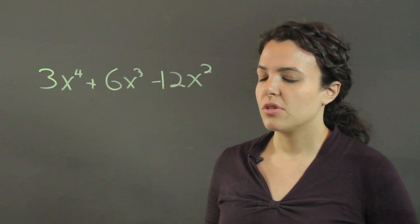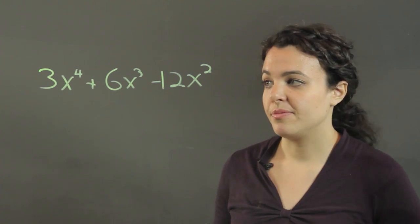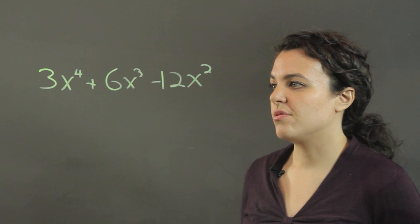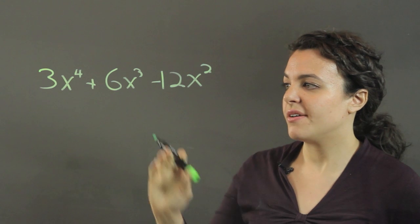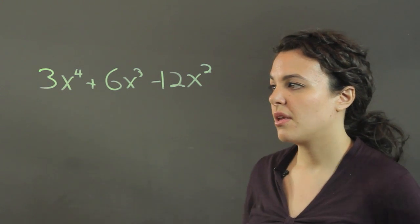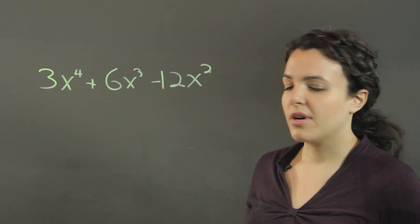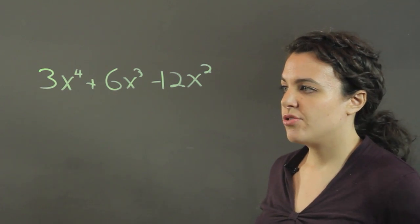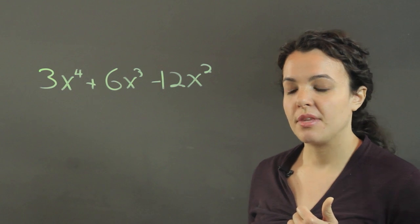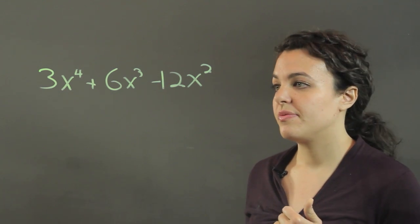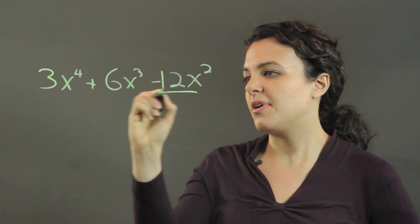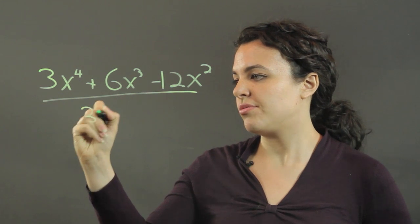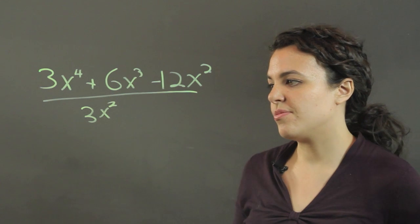And to factor out a monomial, you want to look for the greatest common factor that we can find in each term. And what I see is that I can factor a 3 from each term and an x squared. So you go ahead and divide that out, a 3x squared from each term.